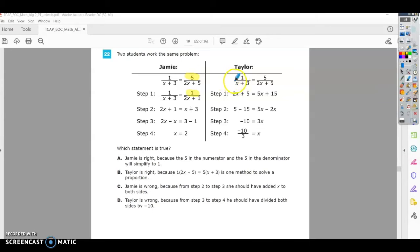On Taylor's side, it looks like they took the 1 and multiplied it by 2x. Then they did (x + 3) times 5. So 5 times x is 5x, and 5 times 3 is 15. This step one on Taylor's side looks correct.